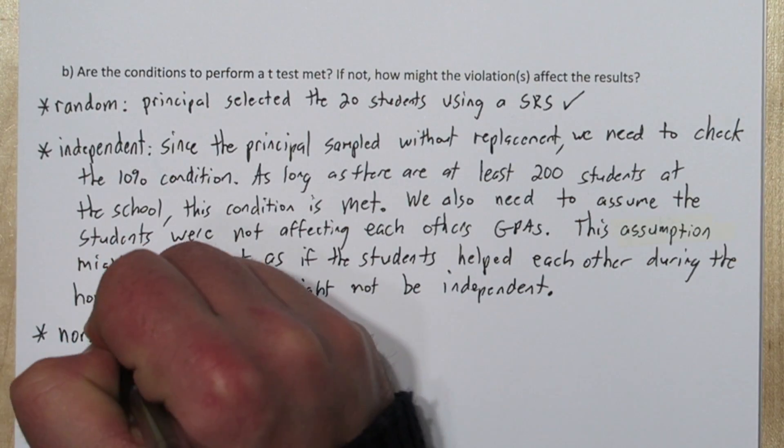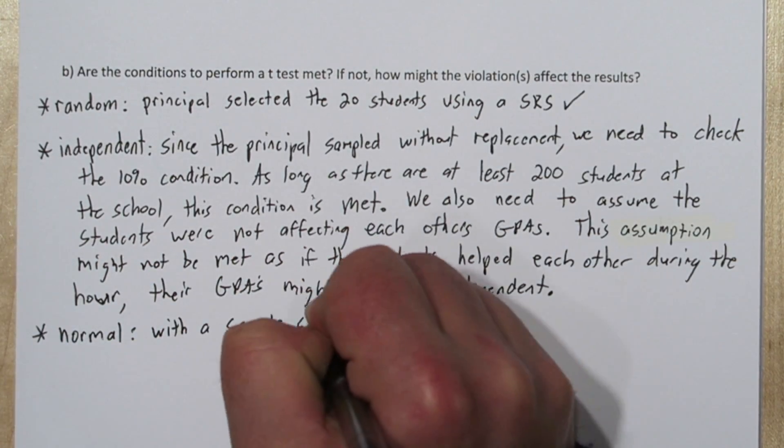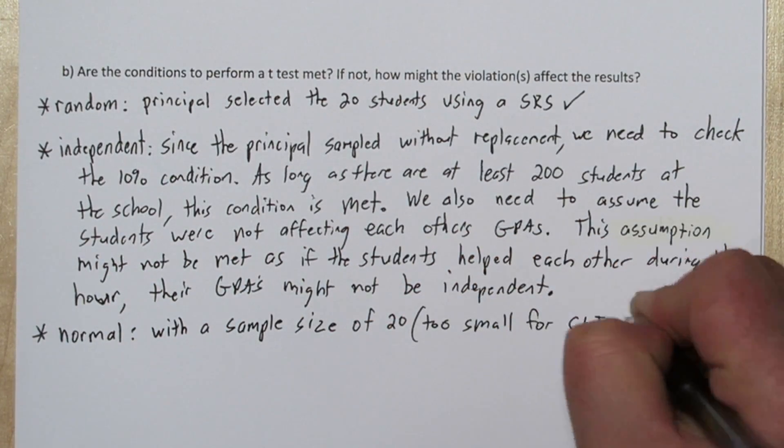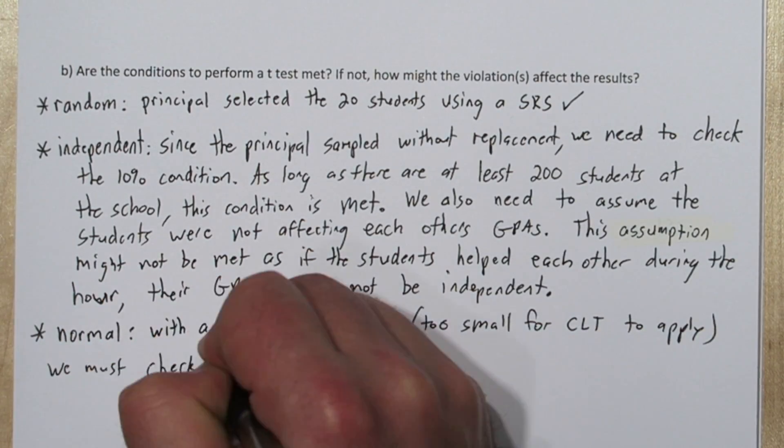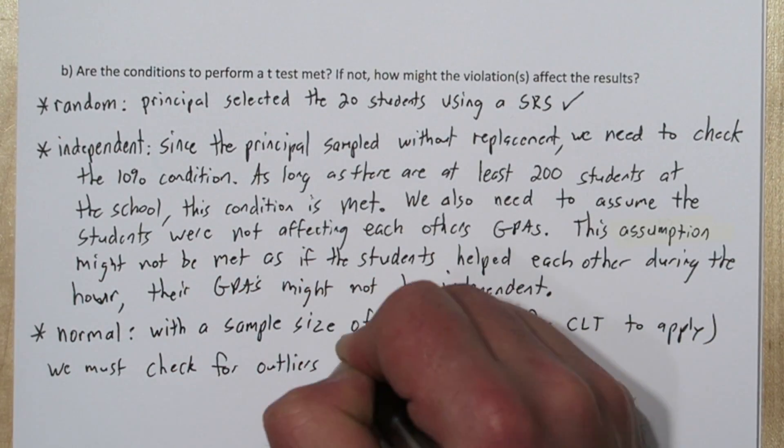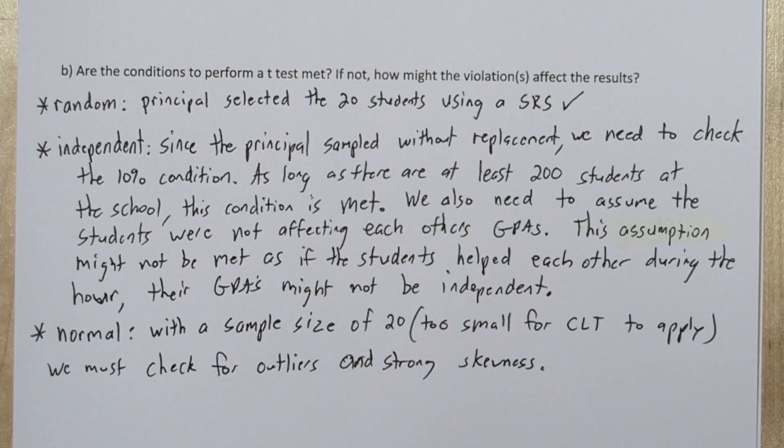The last condition is the normal condition. Our sample size is only 20. That's too small for the central limit theorem to apply. So we need to make sure our sample doesn't have outliers or strong skewness.